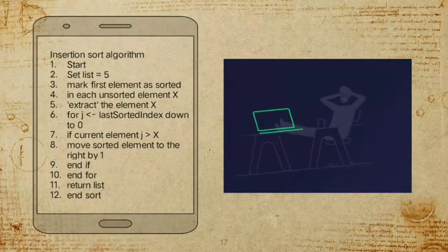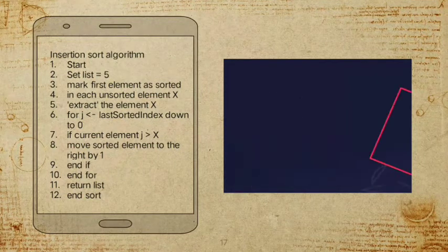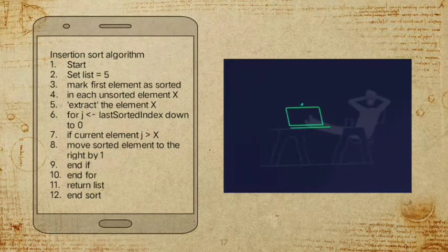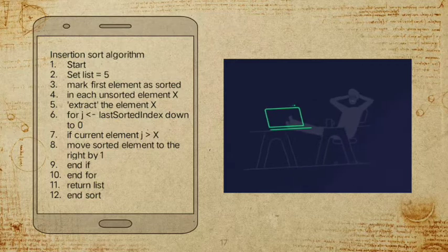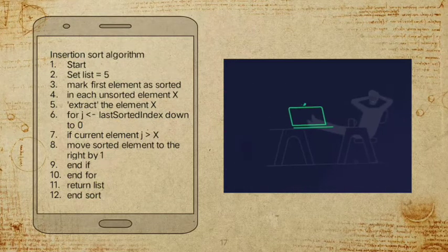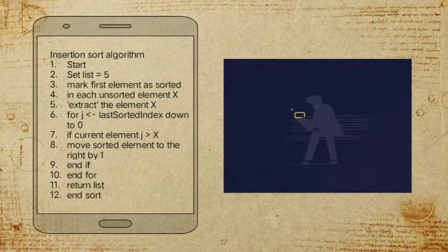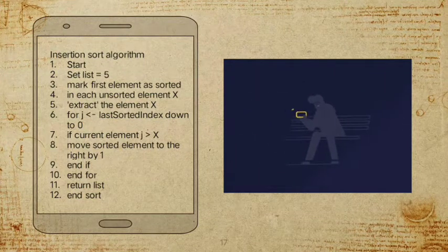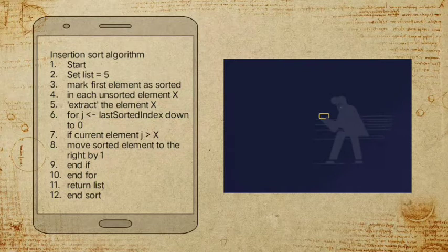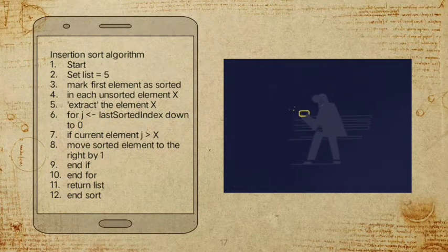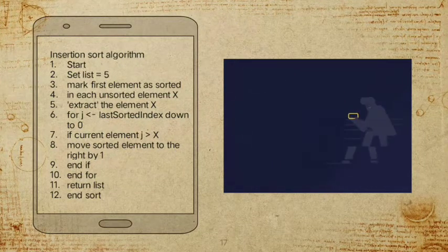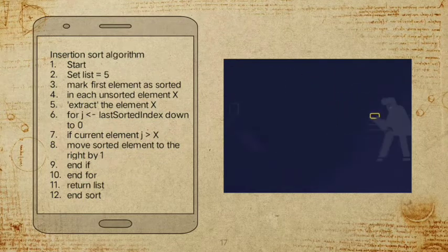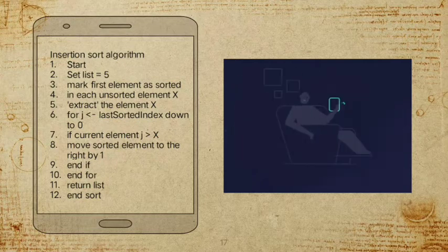Here is our insertion sort algorithm. Start; set list number of array elements equals 5; mark the first element as sorted; for each unsorted element equal to x, extract the element x; for g from the last sorted index down to zero, if the current element g is greater than the extracted element x, move the sorted element to the right by one; end if; end for.